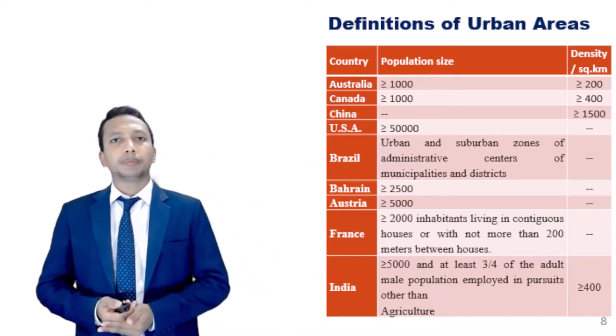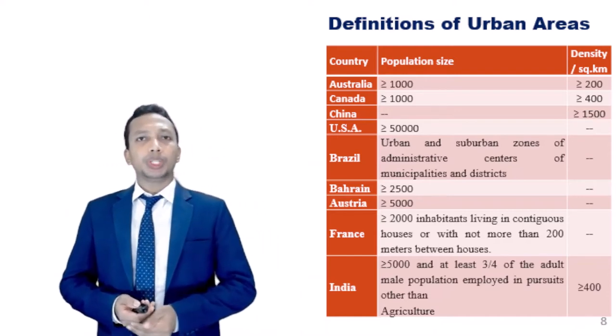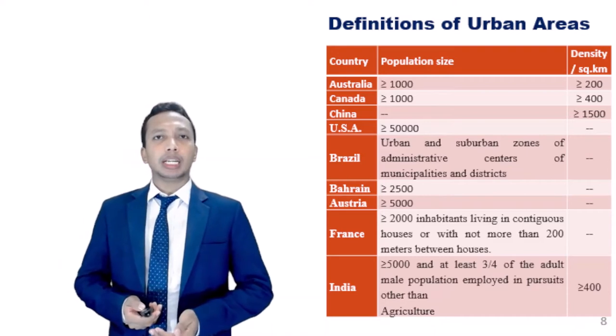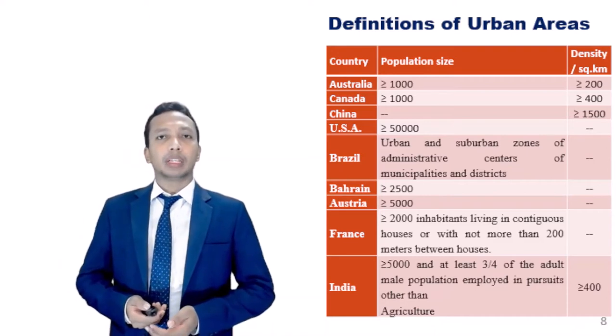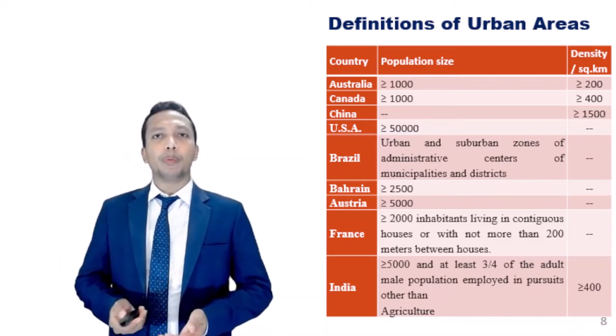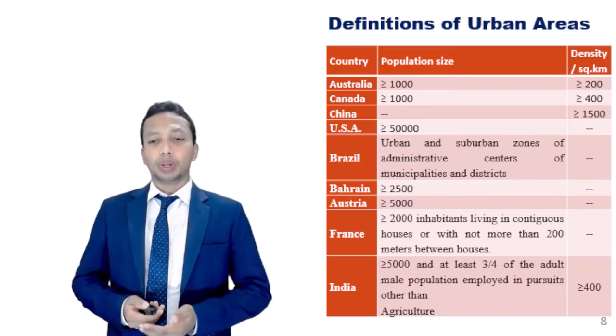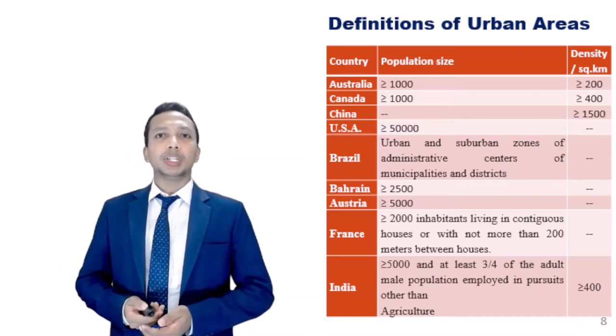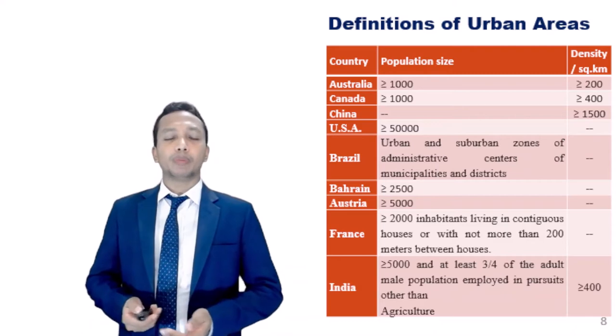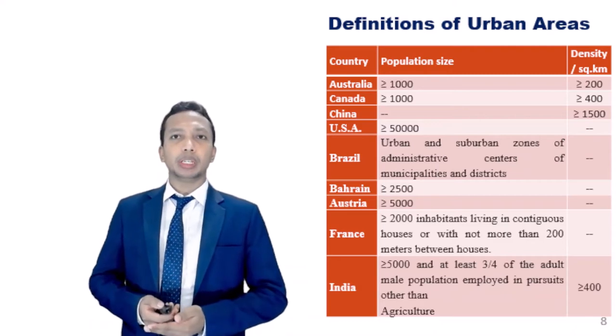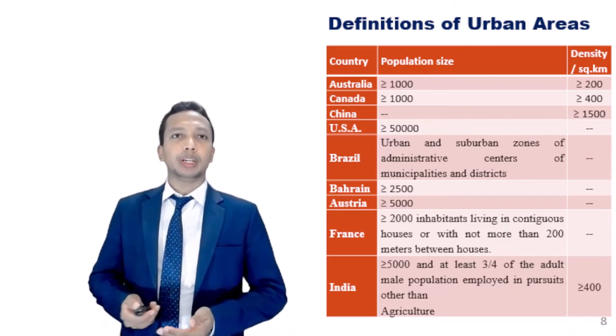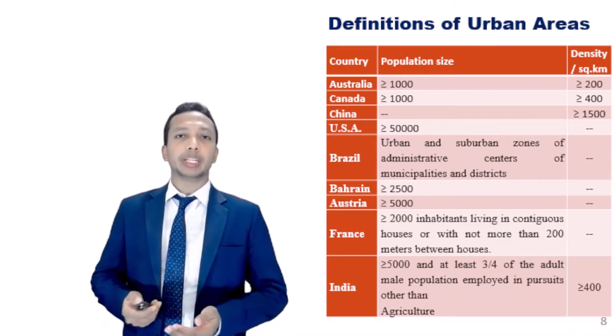Like in Australia, a population cluster of a thousand or more people with a density of 200 or more persons per square kilometer is known as a town.